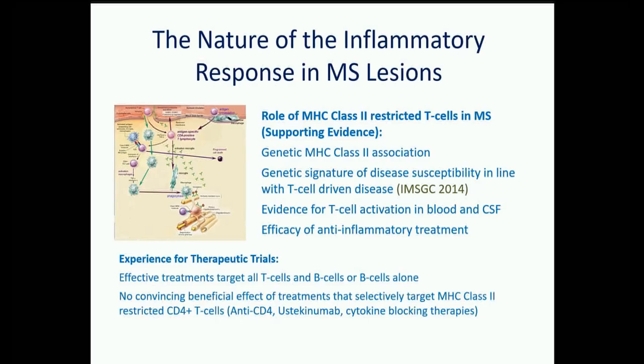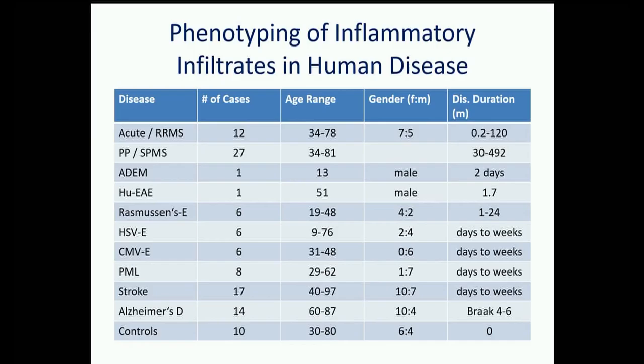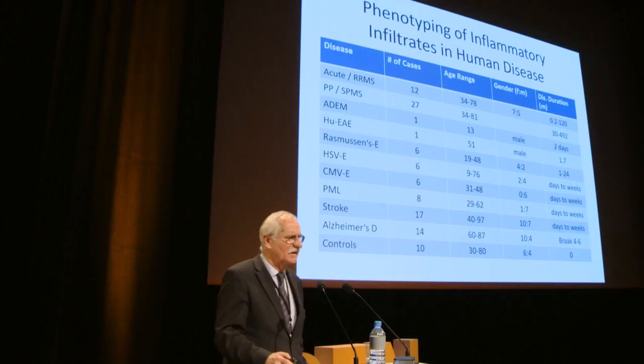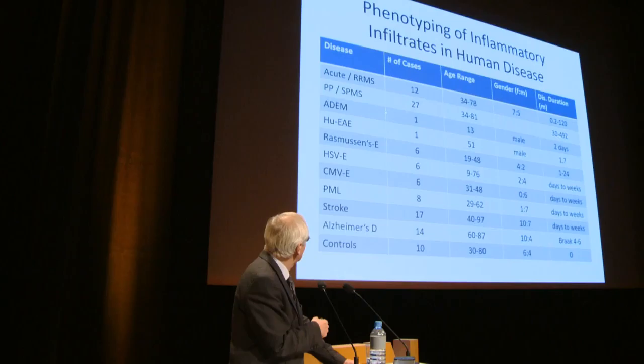This scheme fits EAE but is not necessarily the full picture of MS. To address this, a comprehensive study was undertaken to phenotype the inflammatory response in many cases of acute MS — with clinical duration ranging from 14 days to several months — progressive MS, and a large spectrum of inflammatory and non-inflammatory controls.